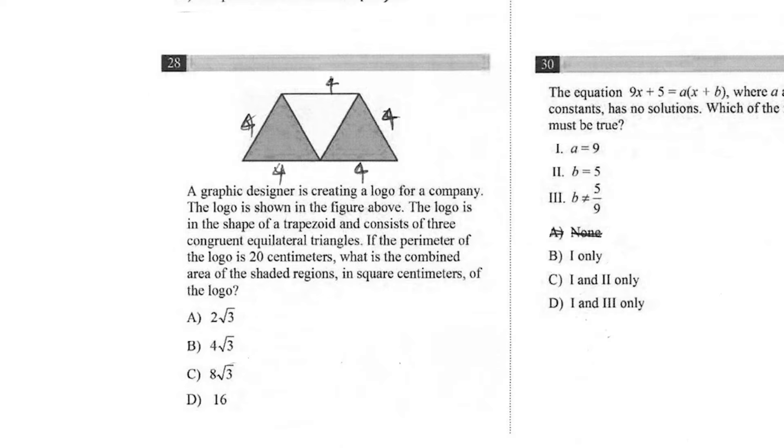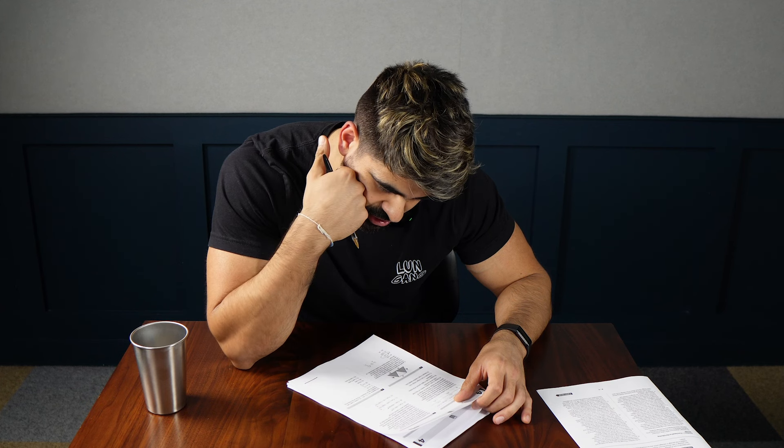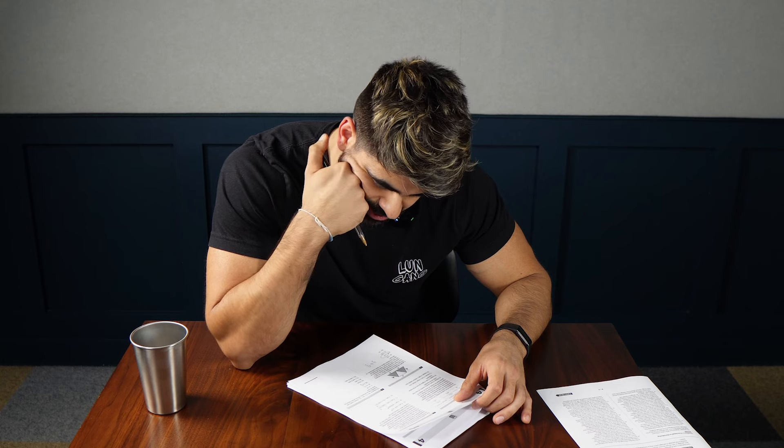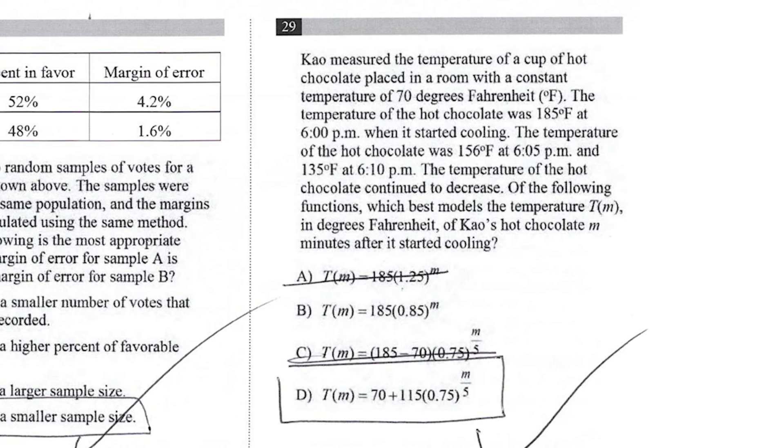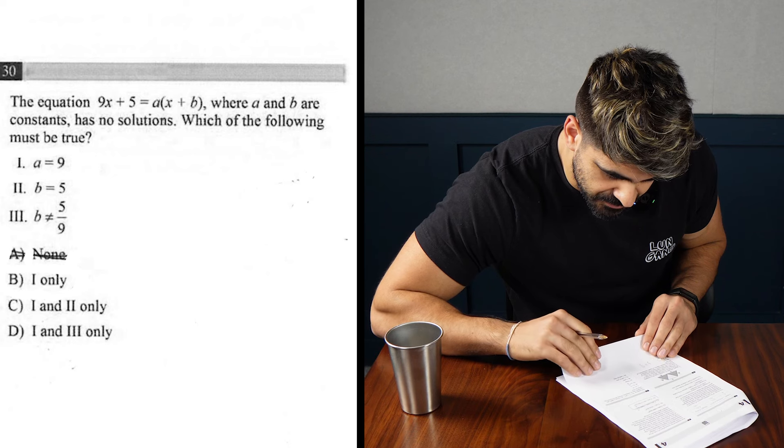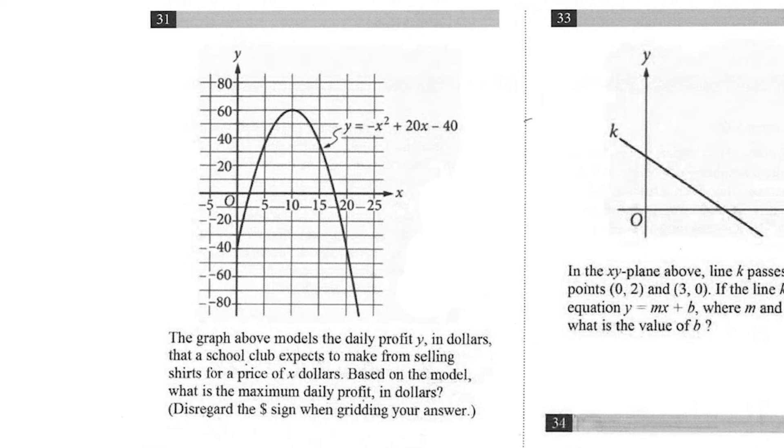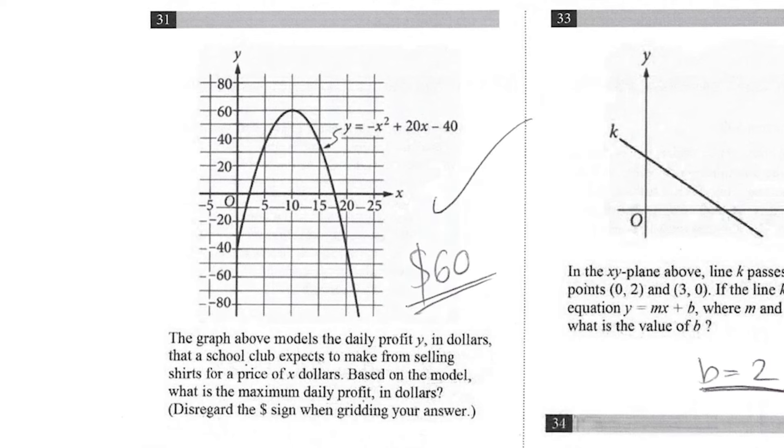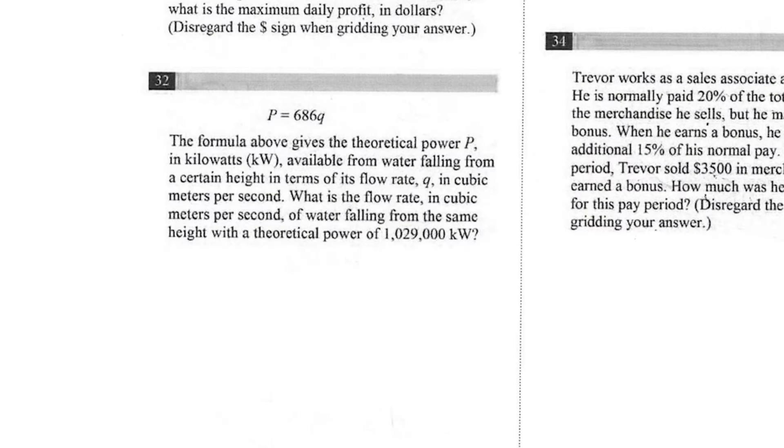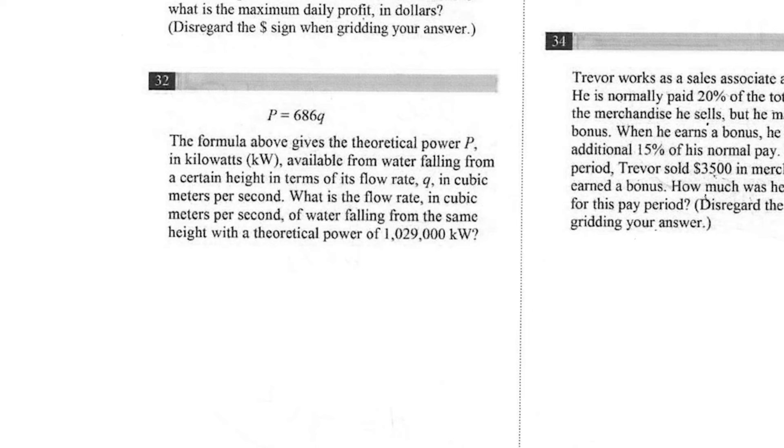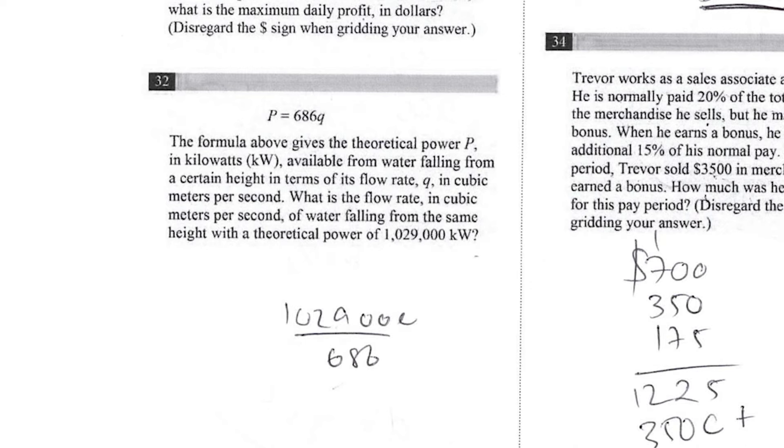What is the combined area of the shaded regions? 403. Of the following functions, which best models the temperature? Yeah, it's going to be D because it has to 10 to 70, which is room temperature. Which of the following must be true? 8 is 9. I'm kind of pressured for time now. Based on the model, what is the maximum daily profit in dollars? 60, right? What is the flow rate in cubic meters per second of water falling from the same height? No, I can't do that without a calculator. 1029,000 divided by 686, which I just can't do without a calculator.